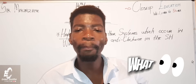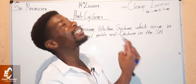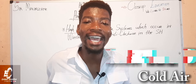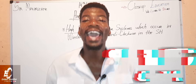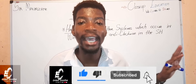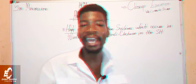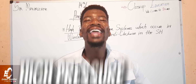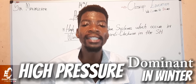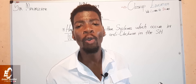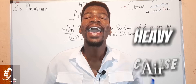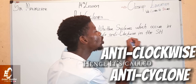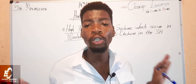Let's break down this definition. High pressure simply means descending air — we can also say subsiding or sinking air. It occurs in winter because high pressure is strong in winter, and the air that descends is usually heavy cold air.